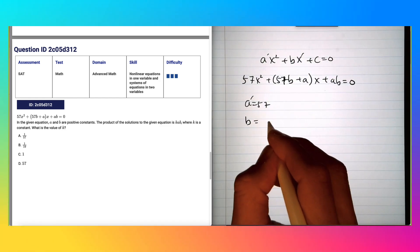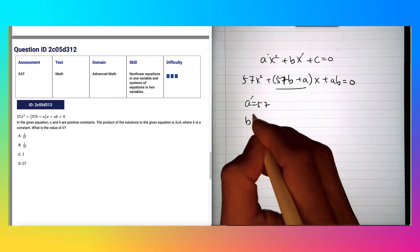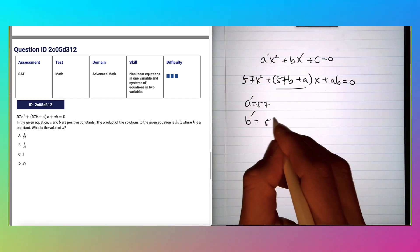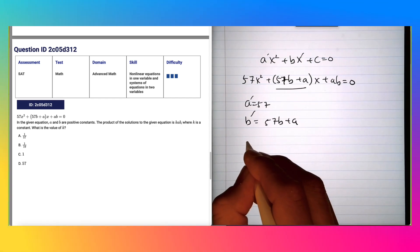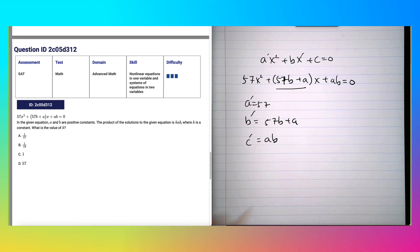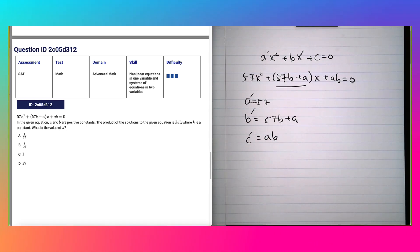So b prime is equal to 57b plus a and c prime would be ab. Now it says the product of a solution to the given equation is kab.